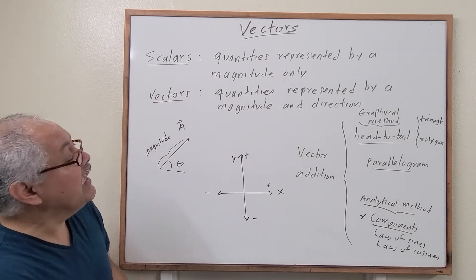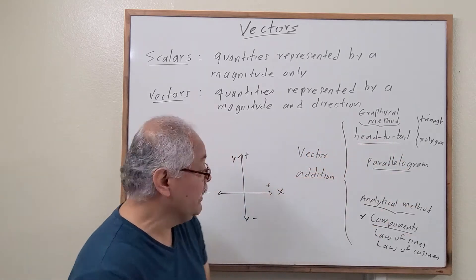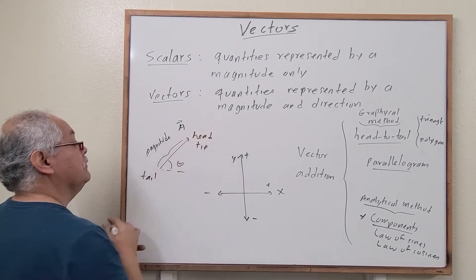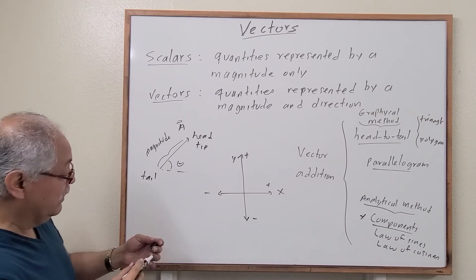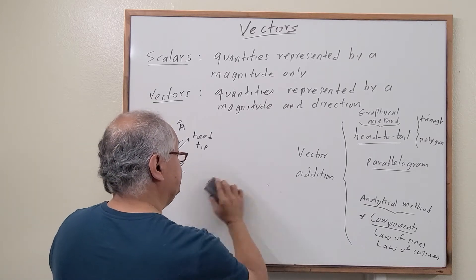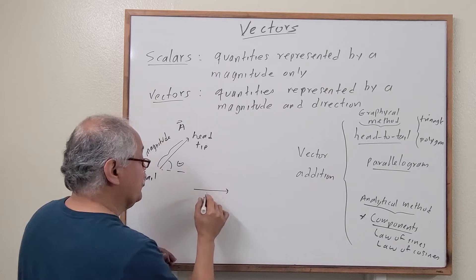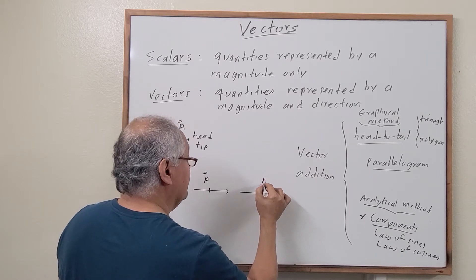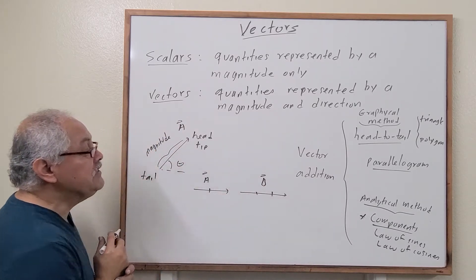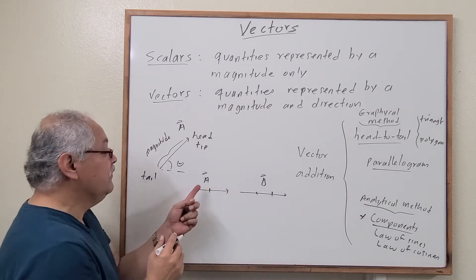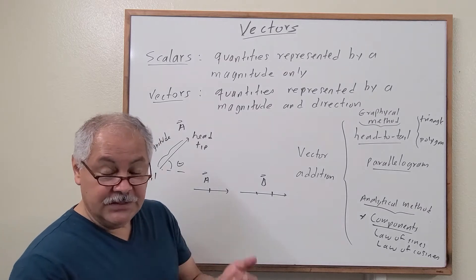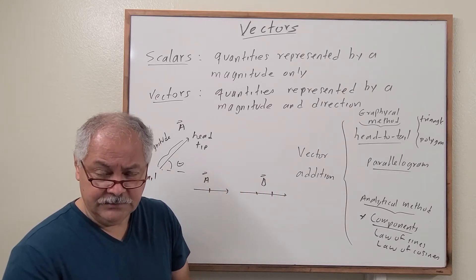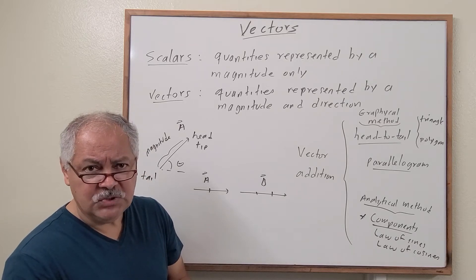Let's add vectors using the head-to-tail technique. The tail is the start of the vector and the head or tip is the end. Imagine we have vector A at 2 units and vector B at 3 units. We take the second vector and place its tail at the tip of the first one. Adding scalars gives a new scalar — for example, 2 kg plus 2 kg equals 4 kg. For vectors, the same concept applies.